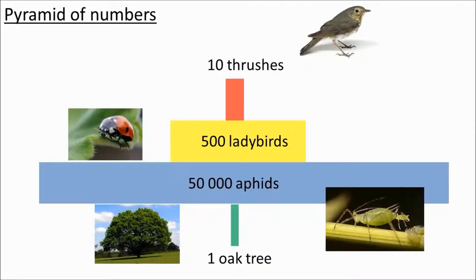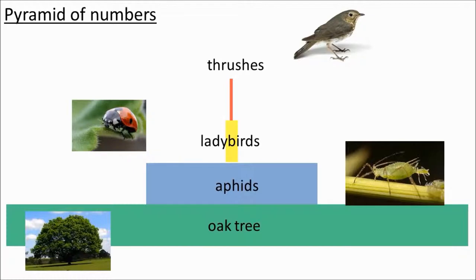Let's finish up by looking at a pyramid of numbers and a pyramid of biomass. This pyramid of numbers isn't really a proper pyramid because we only have one oak tree, so the base is too small. To get a more accurate representation we have to look at a pyramid of biomass. Biomass means the dry mass of living material at a stage in a food chain. The biomass goes down as you go from one stage to the next, just like the amount of energy. It's pretty difficult to draw an accurate pyramid of biomass — how would you weigh the dry mass of an entire oak tree, including its roots?